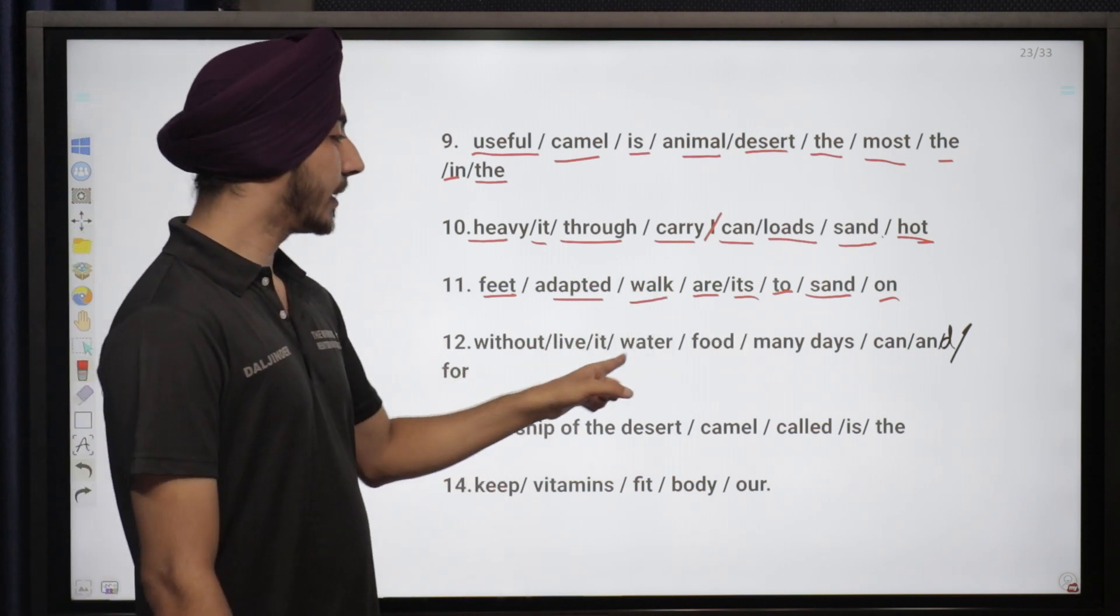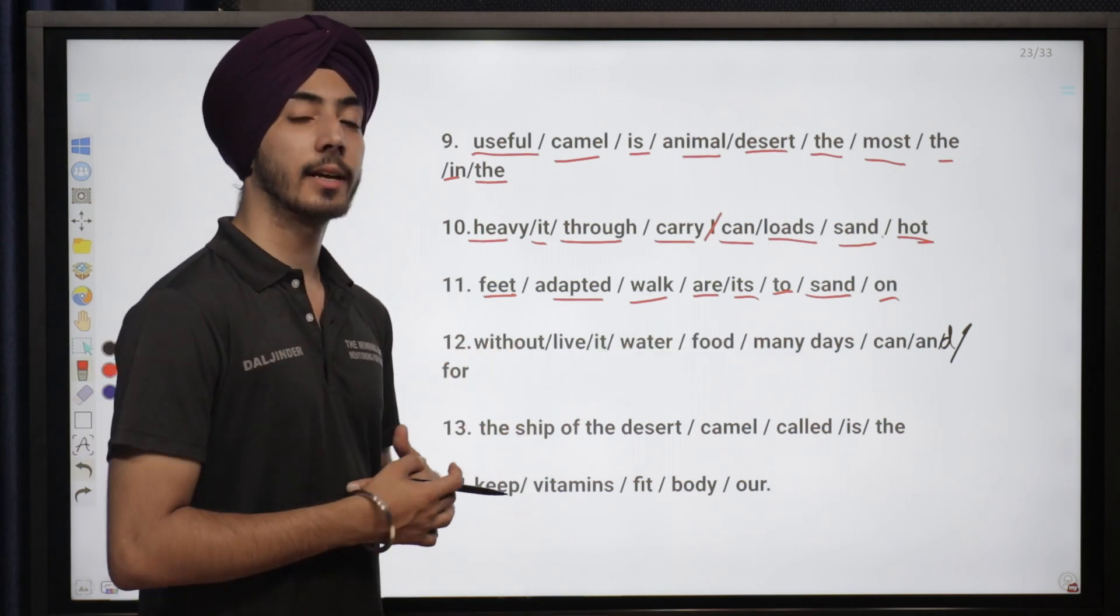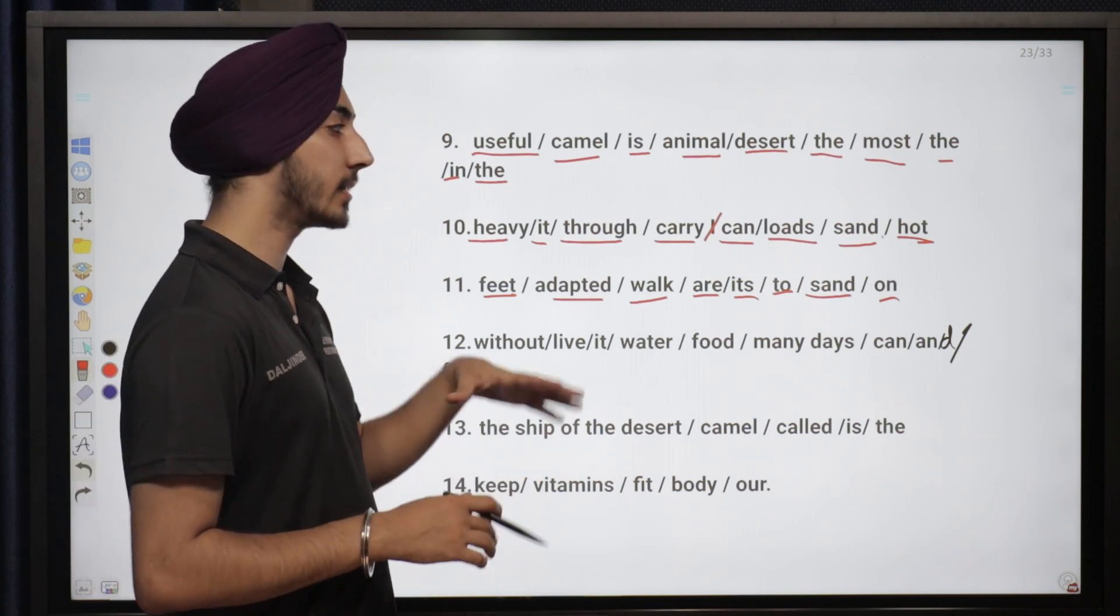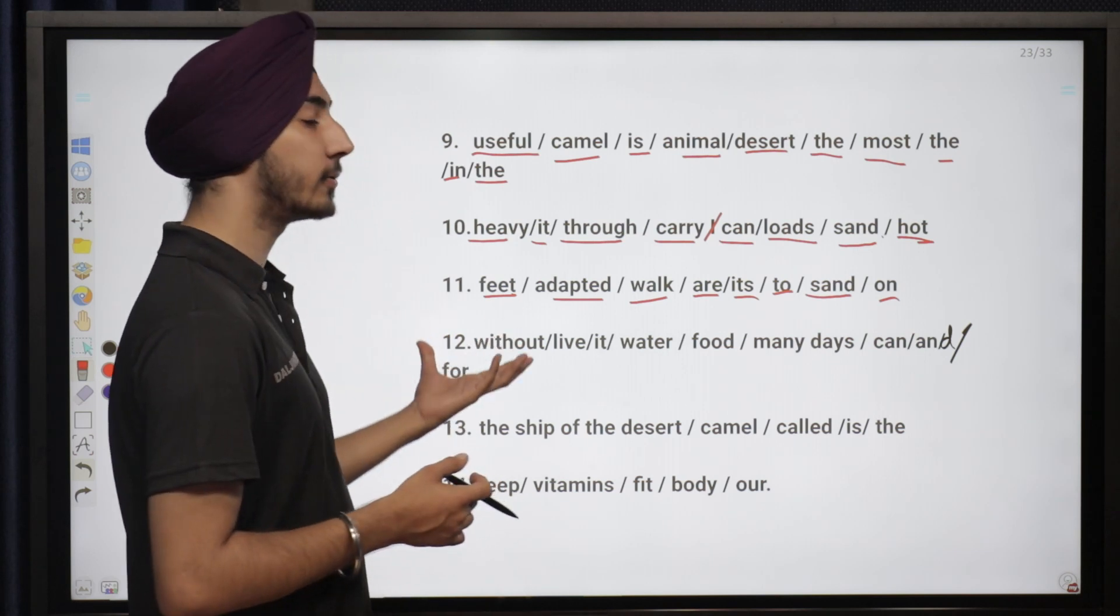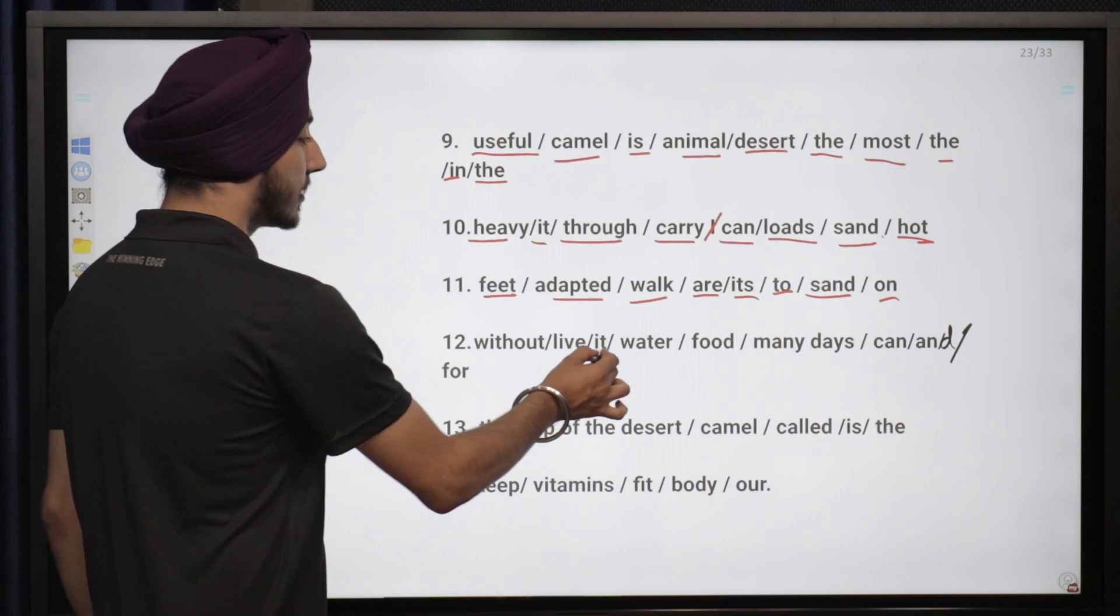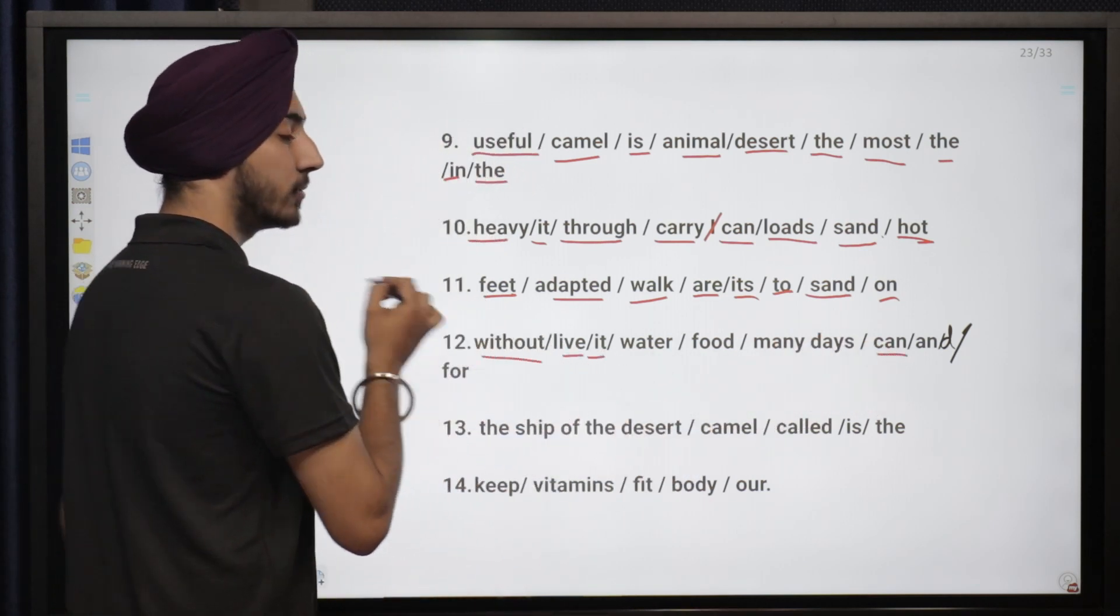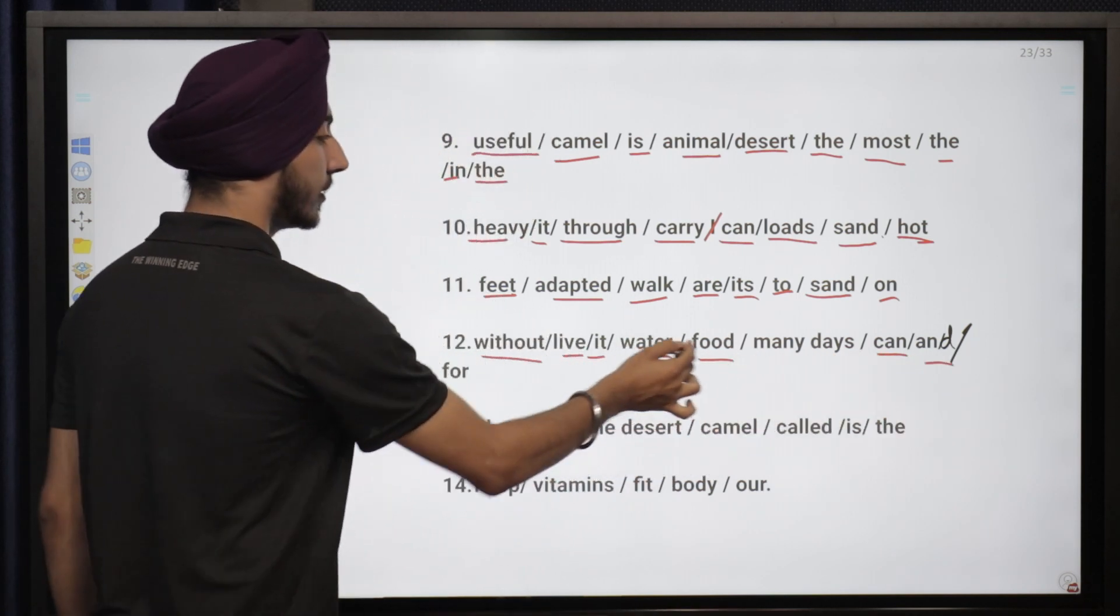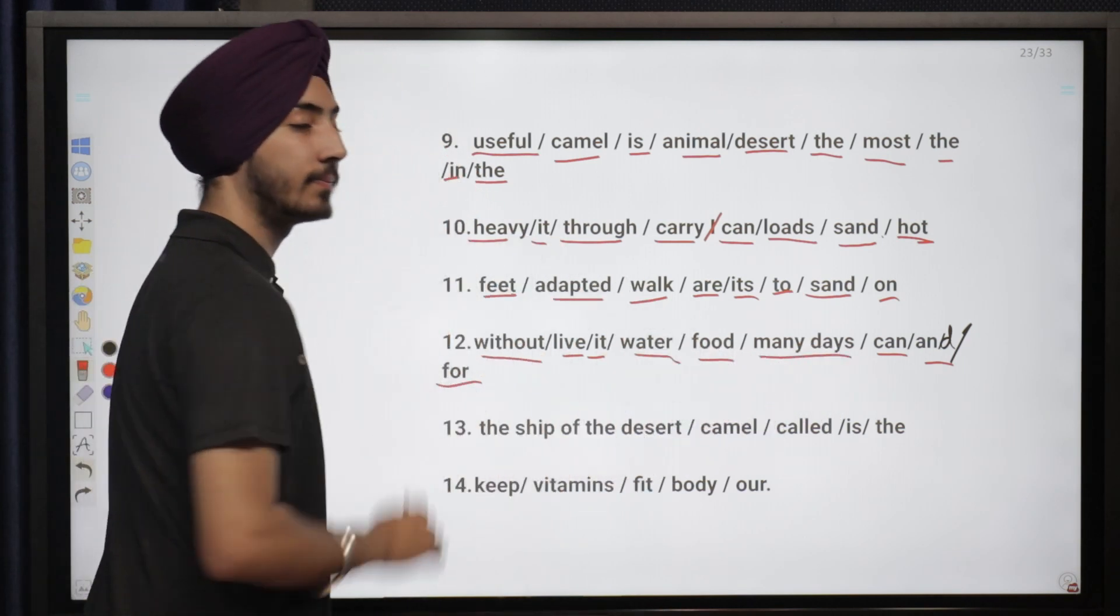Without live it water food many days can and for. The camel can live in the desert without food and water for many days because it has got a hump behind its neck. So it can live without food and water for many days.